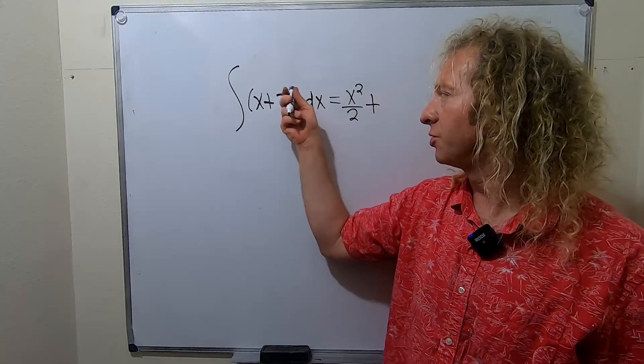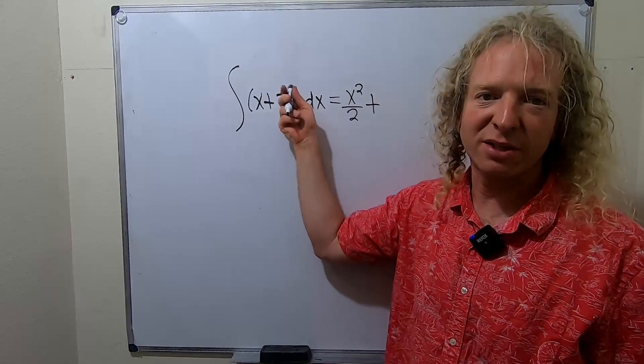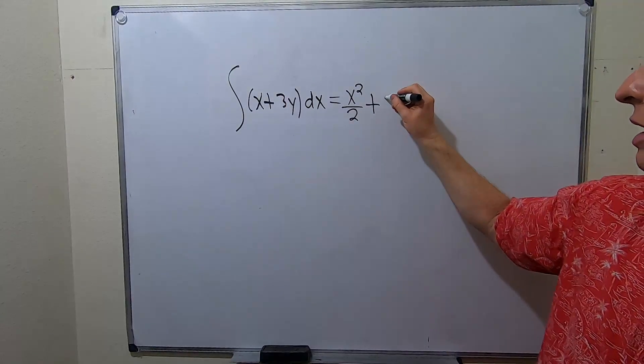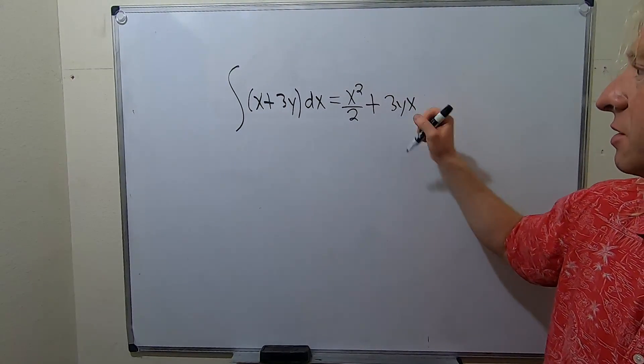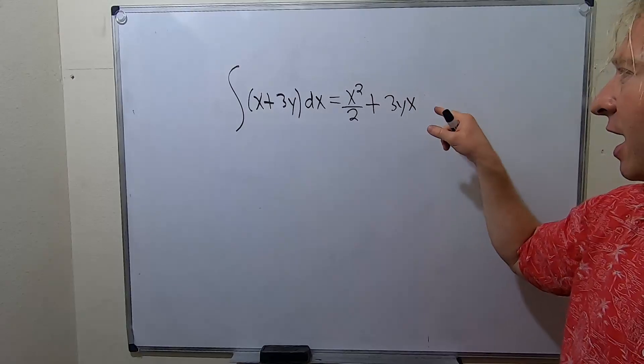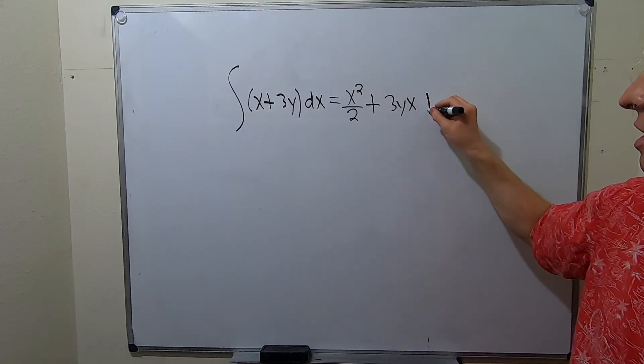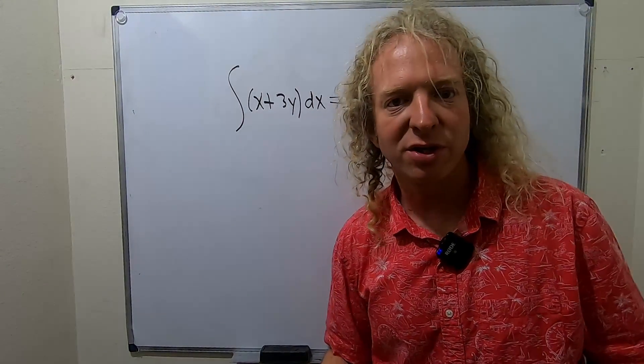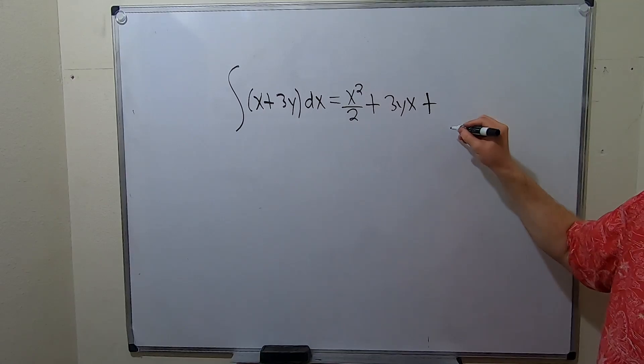You integrate this. So you're integrating with respect to x, so you kind of pretend it's a constant. So you would simply get 3yx, because it's like 3y, so it's like a constant. And you have your x, and then you have to add your constant of integration. So normally you would add a c, you would write plus c.